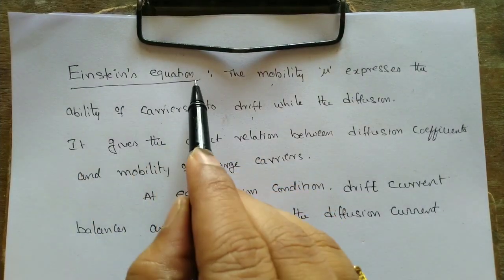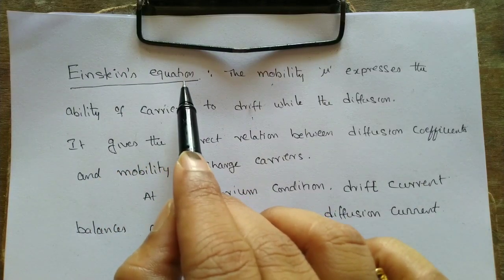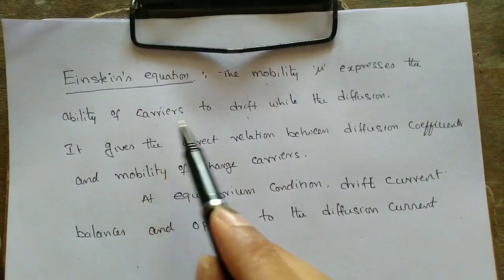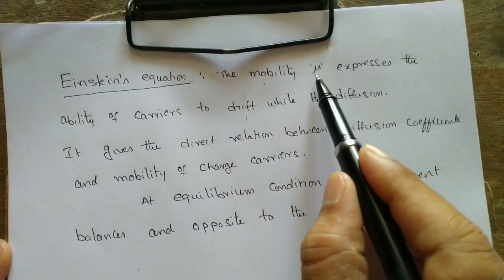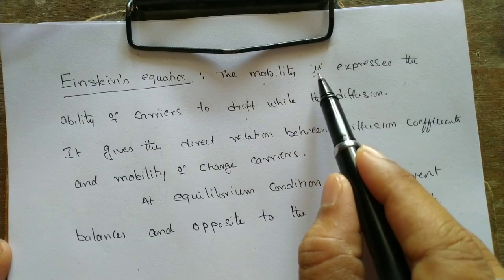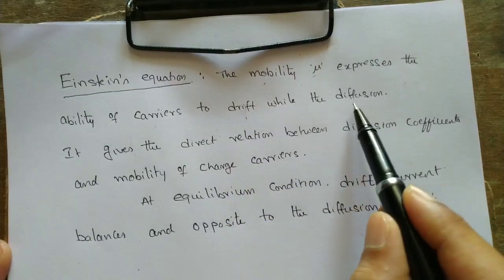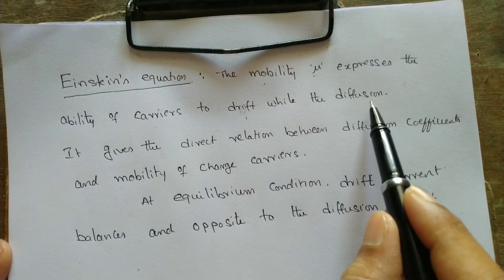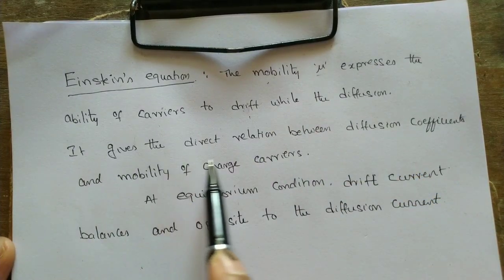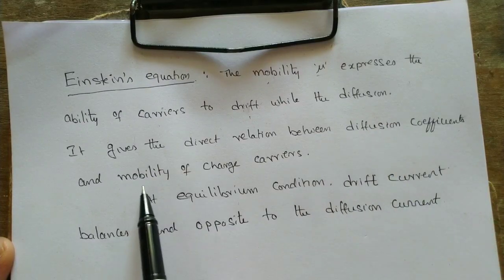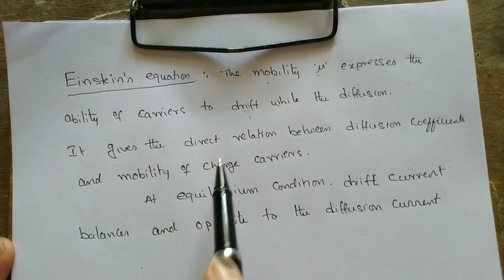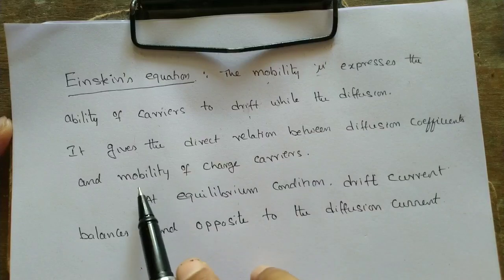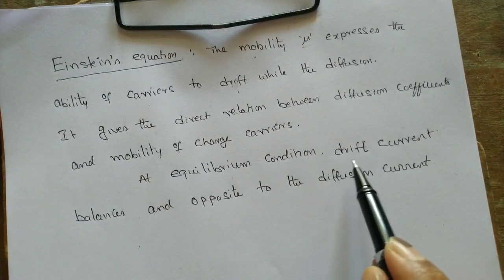Today I am going to discuss Einstein's equation. This topic belongs to the semiconductors lesson. Mobility mu expresses the ability of carriers to drift, while diffusion refers to the movement of the particle. Both drift and diffusion refer to the motion of electrons — that is, the movement of charge. This expression gives the direct relation between diffusion and mobility, where D is the diffusion constant and mu is the mobility.